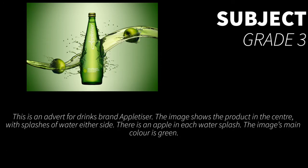We start off with the subject because that is the easiest box. If you only filled out the subject box you'd probably end up with a grade three. We can see that the main colour used is green, there's a bottle made of glass, and there are splashes of water heading towards it with apples in — and that's about it. You can probably tell why that is the easiest box for the lowest grade.